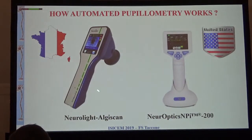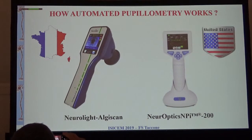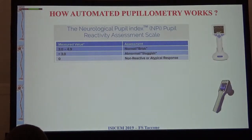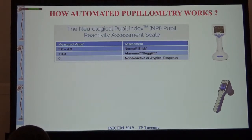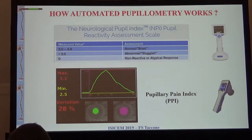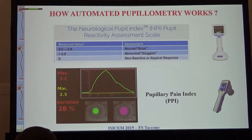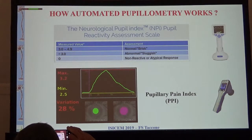There are two systems: one coming from France, the other from the US. There are some differences between the two. For example, one system provides an index that puts together four variables - the size, the constriction, the velocity - so it's a kind of index of the quality of pupillary reflex: the MPI, from 0 to 5, where 5 is normal, 0 is no reactivity, and below 3 is considered abnormal. The other system has been more developed for use with pain stimulation and can evaluate pupillary dilation - a system that anesthesiologists have used to evaluate the quality of analgesia during surgical procedures.